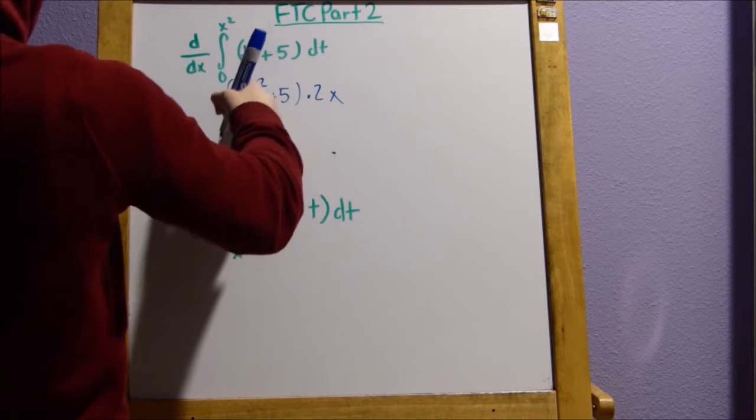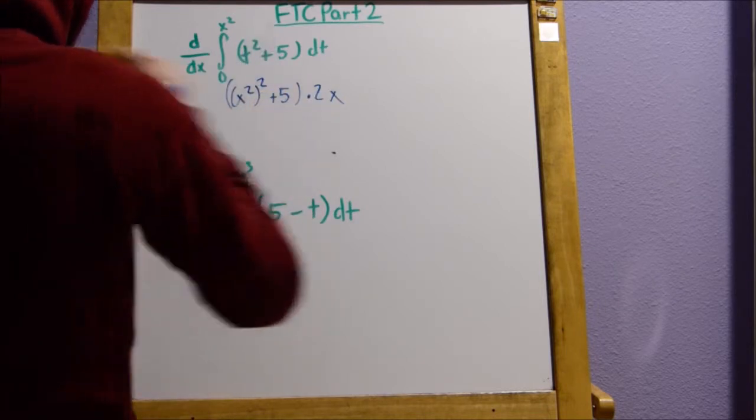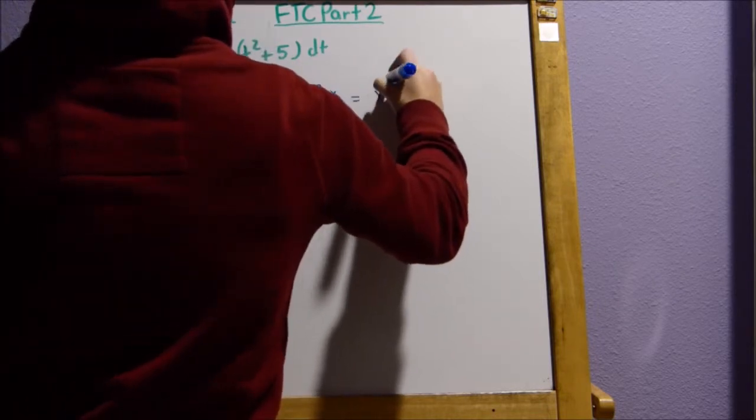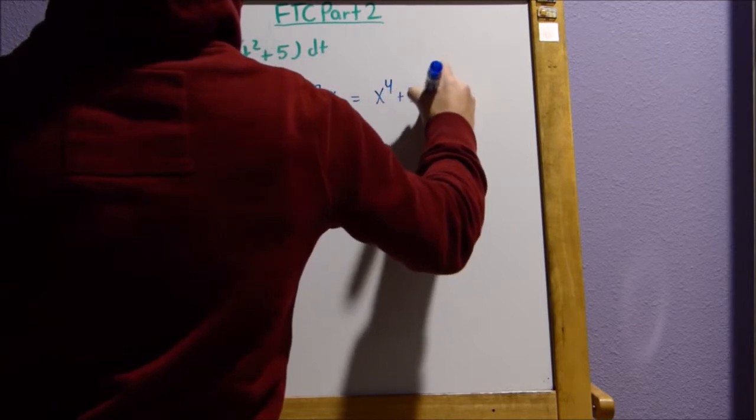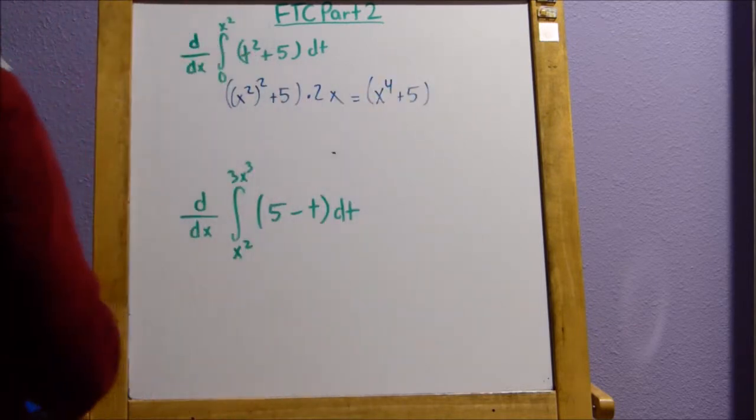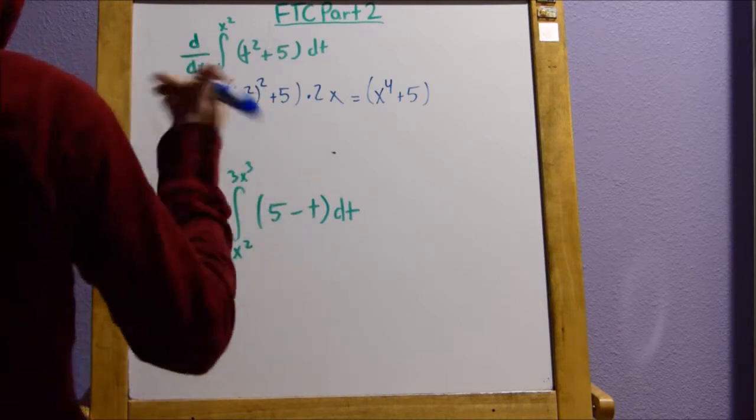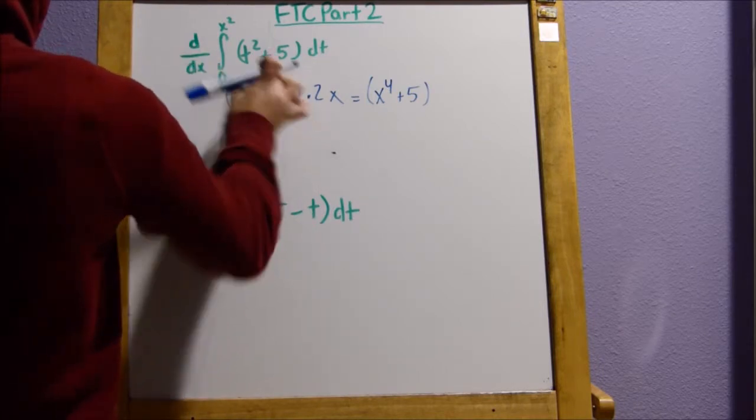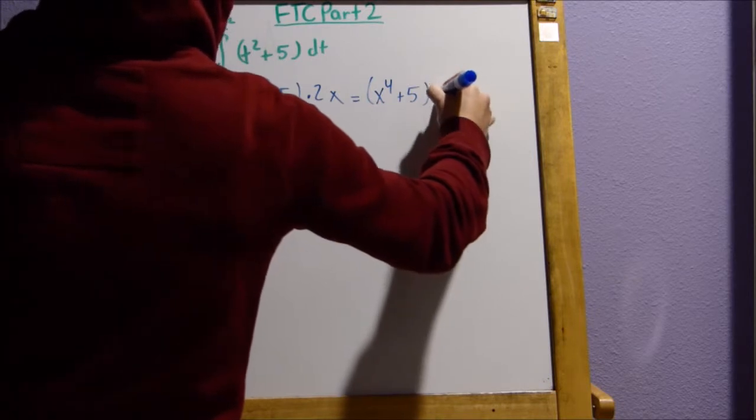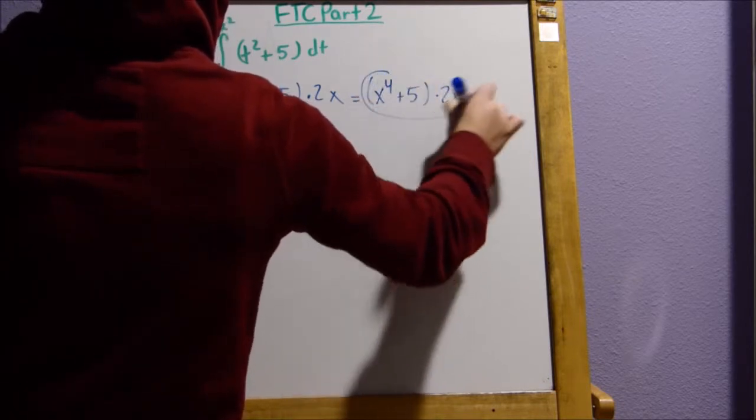Now, we can simplify x squared squared as x to the fourth plus five. And this is because when you square, you multiply these two numbers together times two x. And that is going to be your answer here.